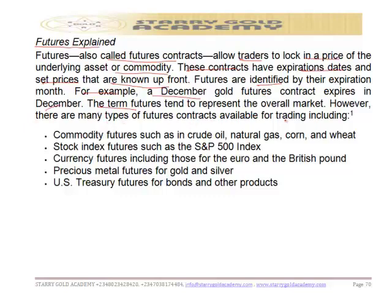There are many types of futures contracts available for trading. First, we have commodity futures such as crude oil, natural gas, corn, and wheat. We also have stock index futures — including the S&P 100, German DAX, CAC 40 for France, and the NSE All-Share Index for Nigeria. We have currency futures which include those for the euro and British pound, precious metal futures for gold and silver, and US treasury futures.